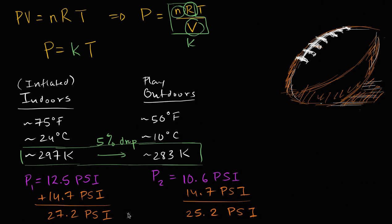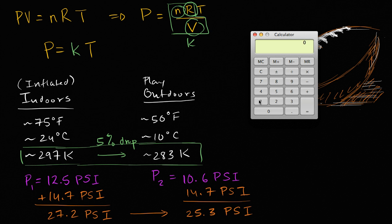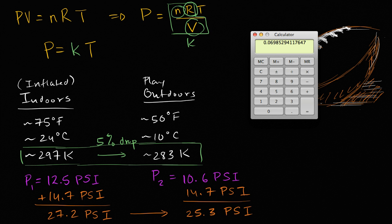Now we can calculate the actual percentage drop and compare it to this 5% drop. We still have a 1.9 PSI drop to go from 27.2 to 25.3, but it's over a larger base, so it should be a lower percentage. Now let's calculate what that is. So we have 1.9 PSI drop divided by 27.2 PSI, which is a little under a 7% drop. So it looks like approximately a 7% drop.